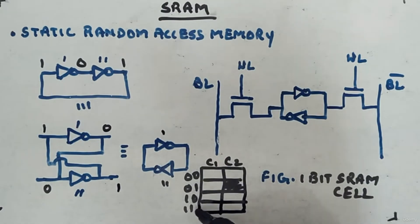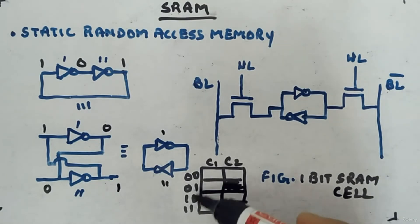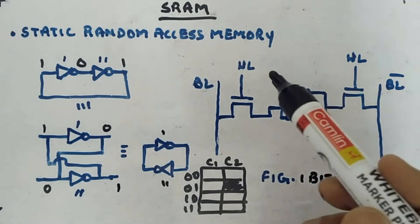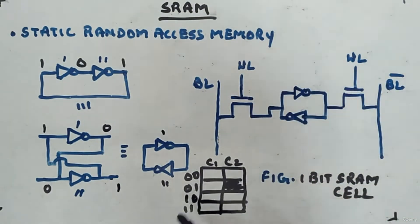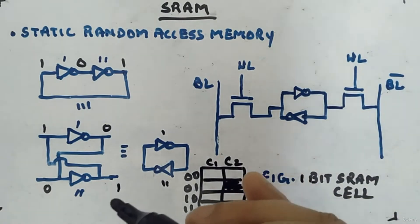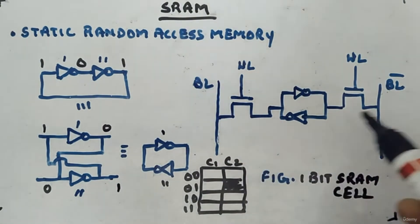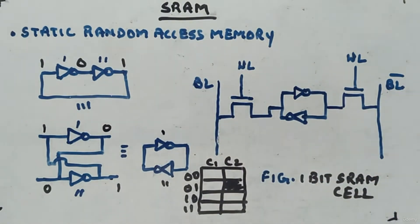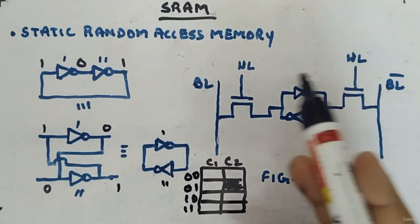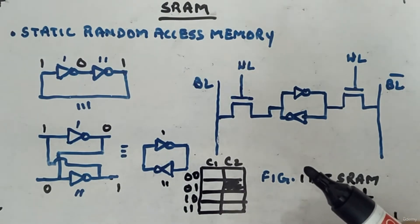These lines 0,0,0,1,1,0,1,1 are word lines. At a time only one word line is selected — the rest are off. You apply logic high to a word line, meaning you select that row. The remaining rows stay at logic 0. By choosing the bit lines, you select a specific cell. Each cell in this grid stores logic 1 or logic 0.